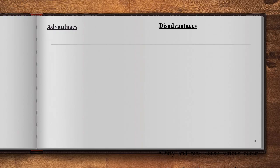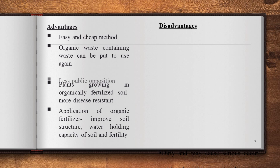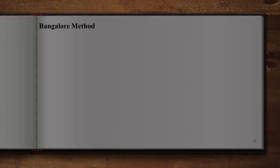The advantages of composting are that it is an easy and cheap method, and organic-based compost can be used as fertilizer. The main disadvantage is that it is a labor-intensive and time-consuming process. Suitability depends on local conditions.